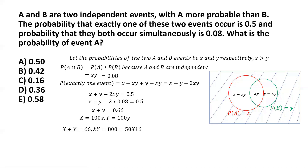If you don't want to guess, you can of course solve this as a quadratic equation — substitute Y = 66 minus X, so the product X times (66 minus X) equals 800, and solve from there. But this one is pretty easy to guess what the solution would be.